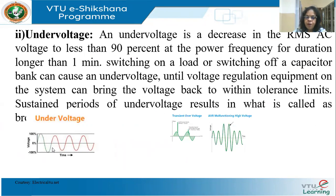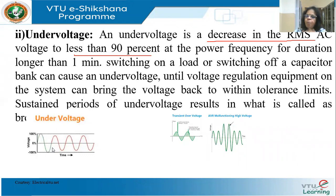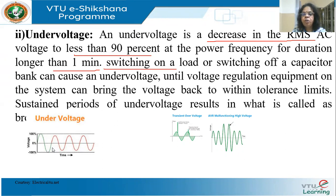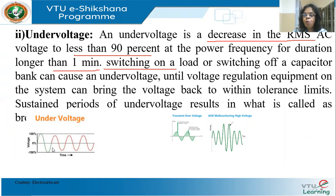Under voltage is the reverse: a decrease in RMS value to less than 90% — that is 0.9 per unit — at power frequency for longer than one minute. Switching on a load or switching off a capacitor bank can cause under voltage. Capacitor banks are installed to improve voltage, so removing them can result in under voltage. Voltage regulation equipment takes some time to bring the voltage back to its original value.